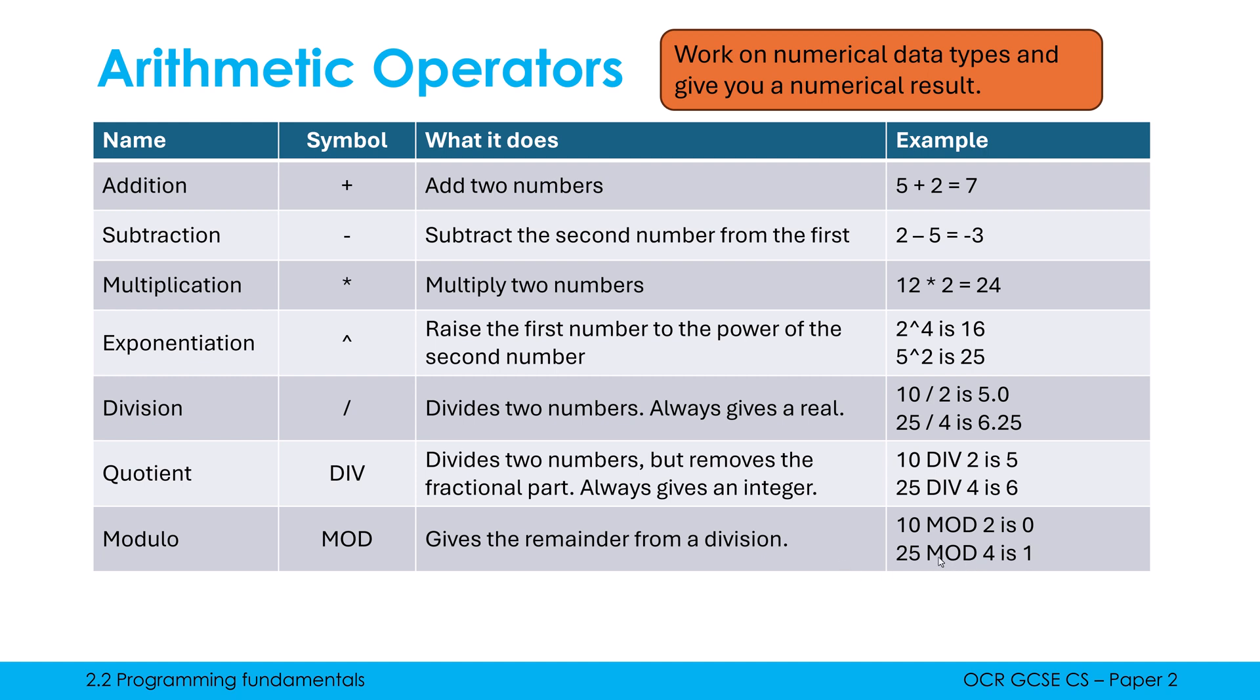But I think it's better to think of it just more simply. You know, how many times does 4 go into 25? Well, it goes in 6 whole times with 1 left over. And the 1 is what MOD would give us. So MOD is our more confusing one.